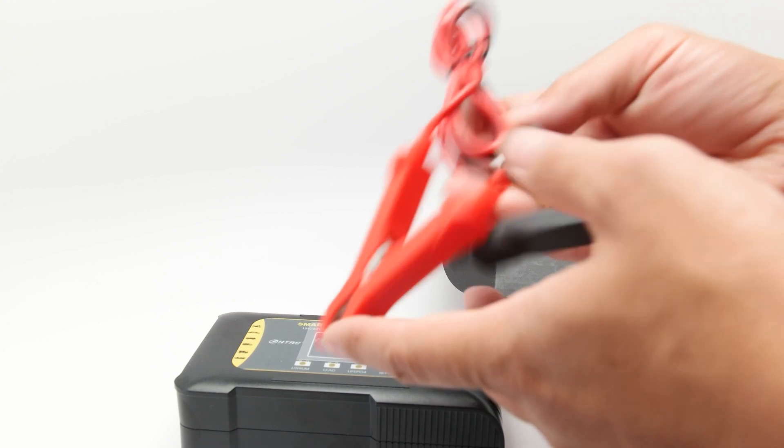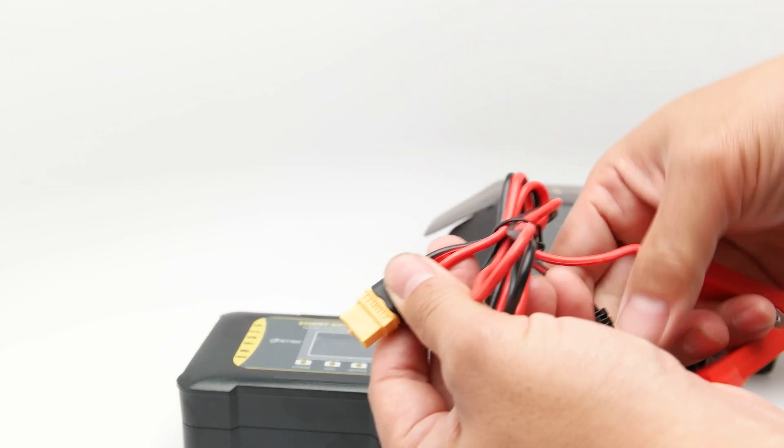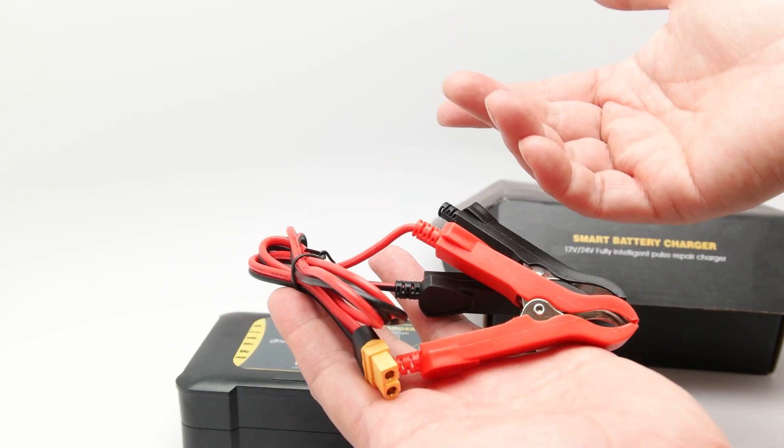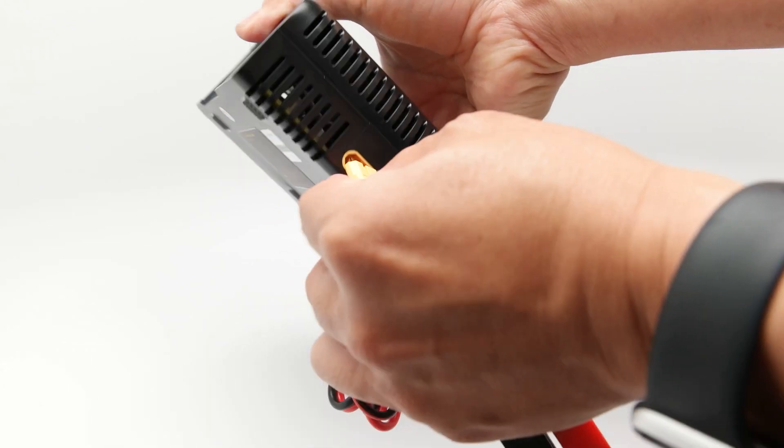All right, now included in here, as you can see, we have the XT60 connector. This is just a really simple little thing. You could use your own connectors if you want, but this is what's included. That just plugs right into this output port over here.